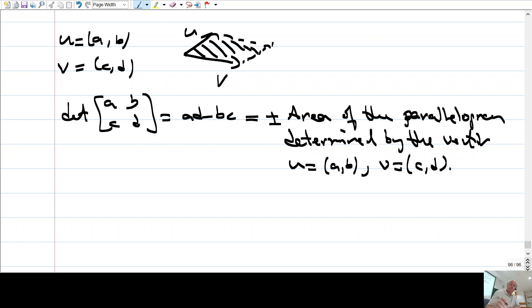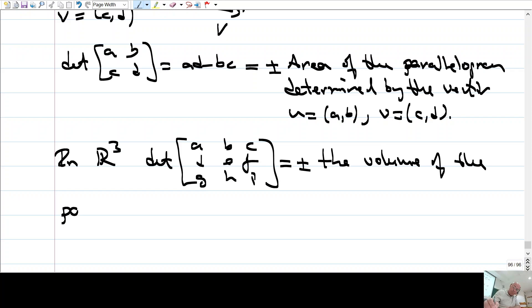All right. What about actually in tree space in R3? So this, if you, let's say, U1, U2, U3, and, okay. In R3, the determinant of, let's say, A, B, C, D, E, F, G, H, I is nothing but the volume, the volume plus minus the volume of the parallel pipette formed by the vectors.